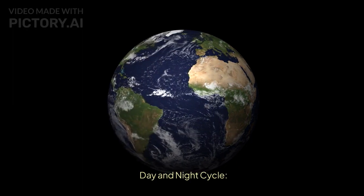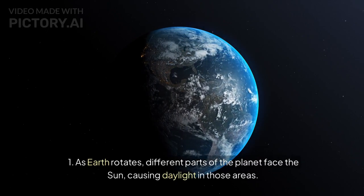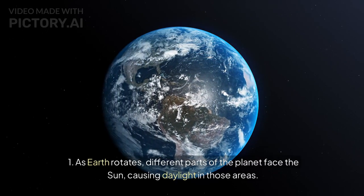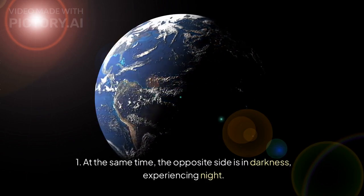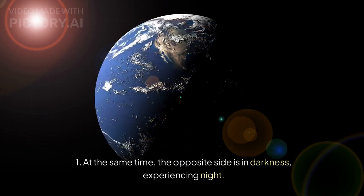Day and night cycle. As Earth rotates, different parts of the planet face the sun, causing daylight in those areas. At the same time, the opposite side is in darkness, experiencing night.